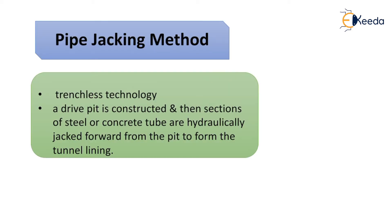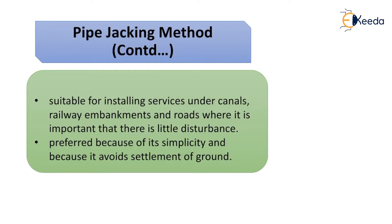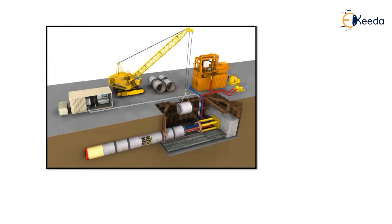The pipe jacking method is a trenchless technology. A drive pit is constructed and then sections of steel or concrete pipe are hydraulically jacked forward from the pit to form a tunnel lining. It is suitable for installing services under canals, railway embankments, and roads where it is important that there is little or no disturbance to the surface. It is preferred because of its simplicity and because it avoids settlement of the ground.